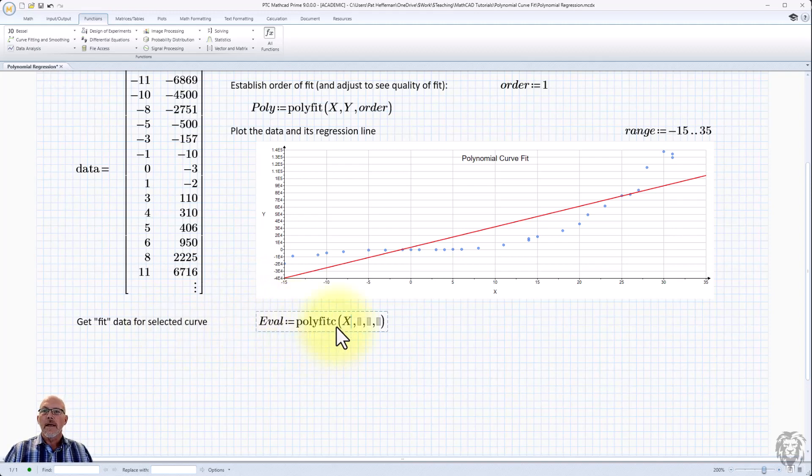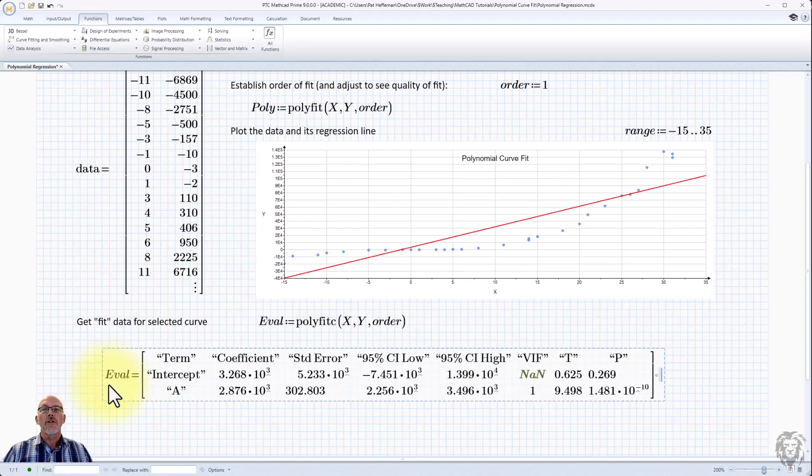x, y, and the order. And we don't need this last one. So I'll delete it. And set it there. And then we can just show the results.